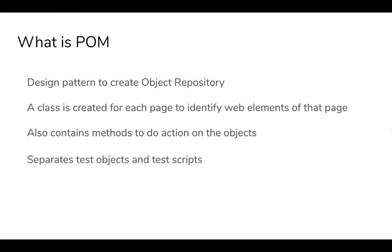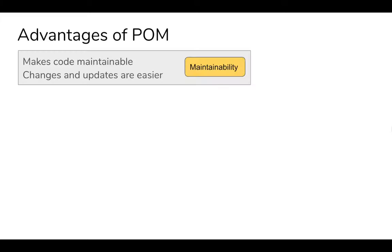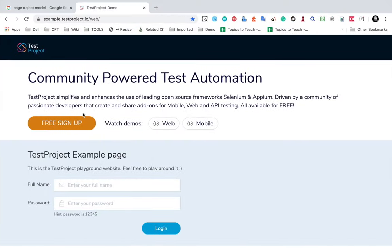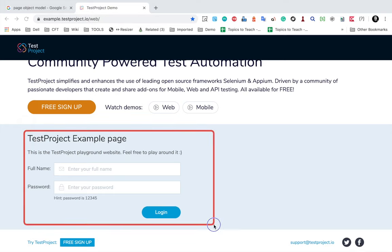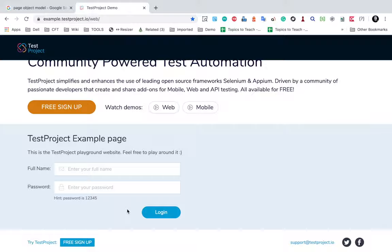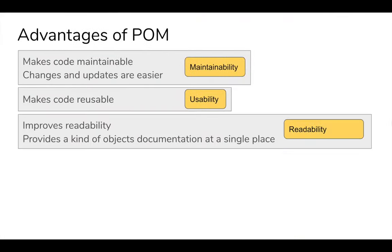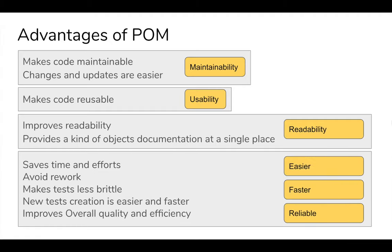The main advantage is it separates the objects from the test scripts, so the code becomes very reusable and maintainable. It improves maintainability — whenever we have to make any changes, we just go to that particular class and do not have to update every location where those objects are used. It also improves readability, saves time and effort, avoids rework, makes tests less brittle, and improves overall quality and efficiency.